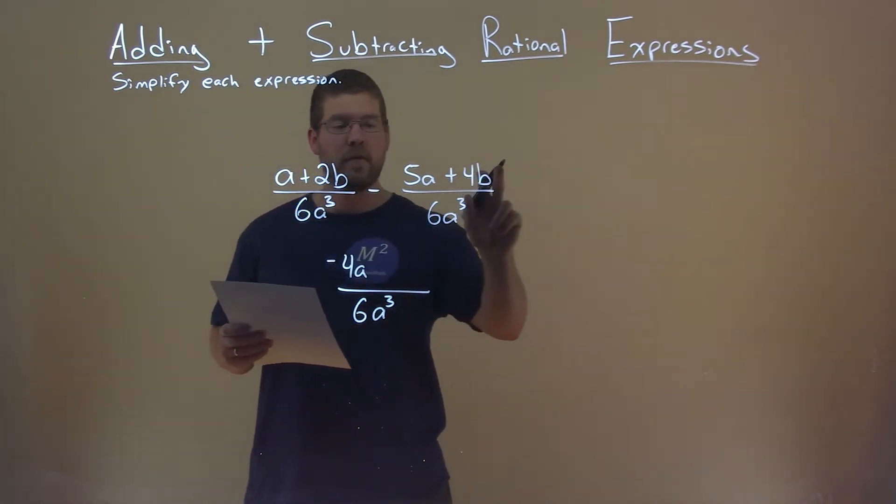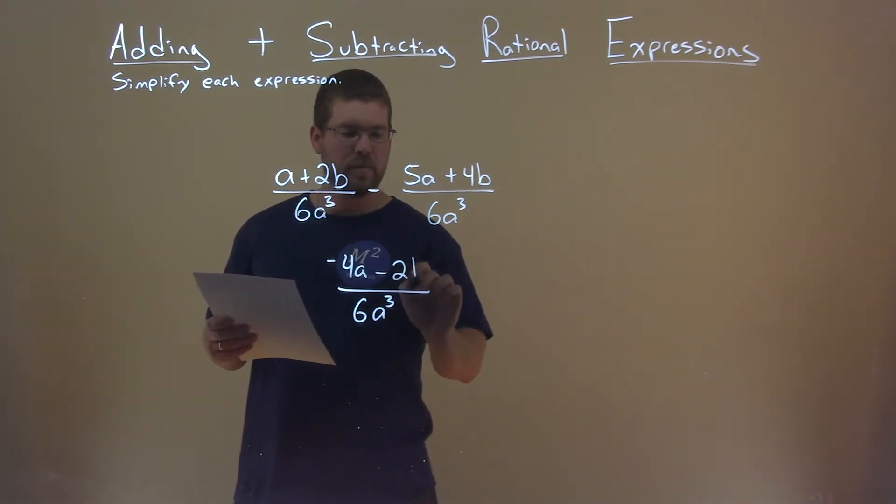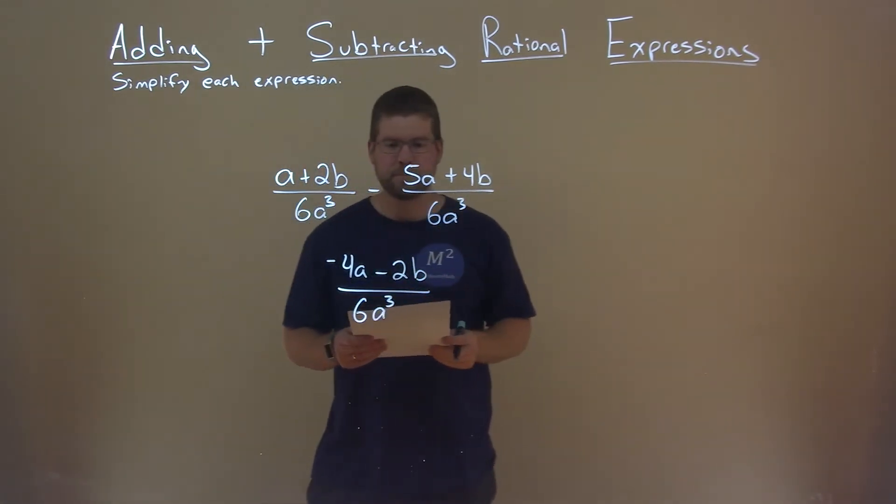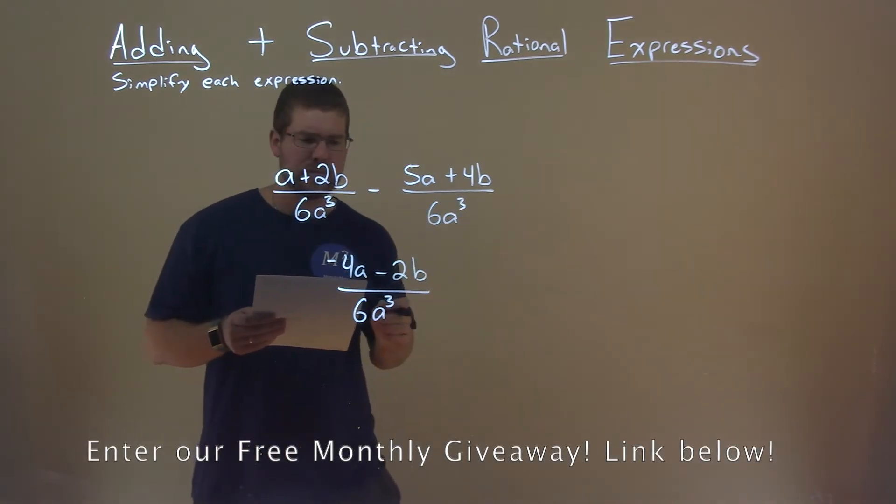2b minus 4b is minus 2b. Well, I still think I can simplify this a little more.